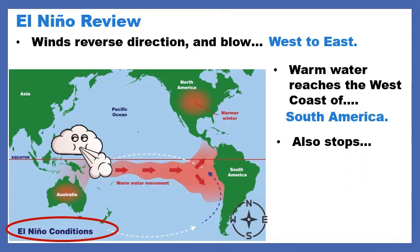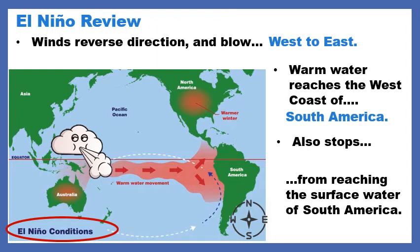El Niño also stops from reaching the surface of South America — there are two missing words between 'stops' and 'from.' Look at where the yellow circle is. Notice it's red there, and red represents warm. What's the opposite of warm? Cold. So El Niño will also stop cold water from reaching the surface of South America.